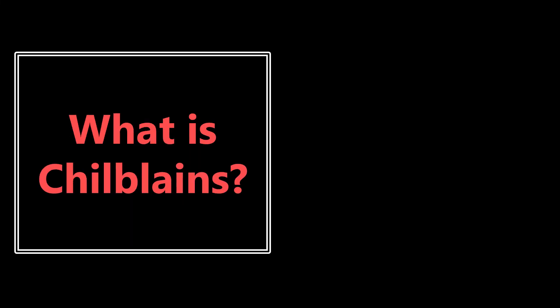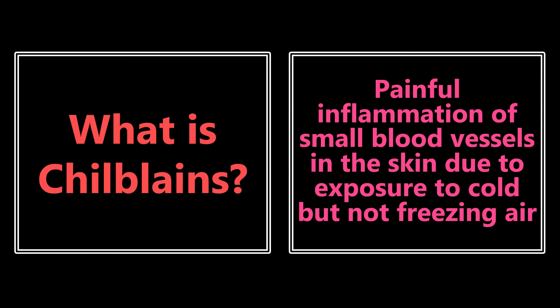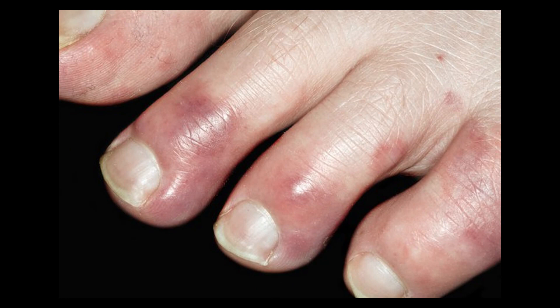What is chilblains? This is painful inflammation of small blood vessels in the skin due to exposure to cold but not freezing air. The other name for it is pernio — P-E-R-N-I-O. It's kind of like a small vessel vasculitis. It can also cause itchiness and blistering. Looking at this visual stimulus of chilblains, we see some of the redness and that painful inflammation in these small blood vessels.